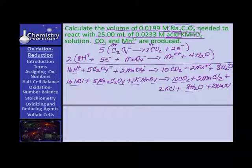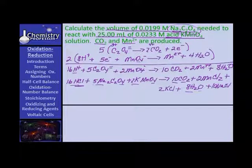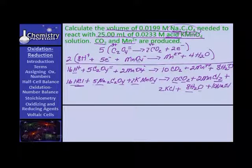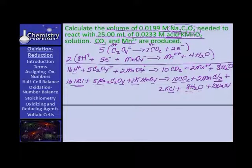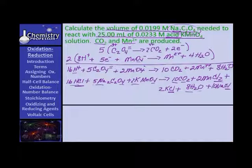Now let's see if our chloride is right. We've got 16 chloride ions over here on the left. We have 4 here, 2 here — that makes 6 — and 10 here makes 16. Guess what? It's balanced.